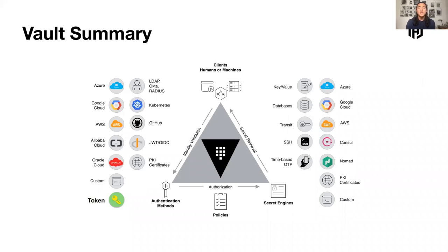On the left-hand side are authentication methods — that's your source identity, effectively the mechanism to prove your identity with Vault. And on the right-hand side are secrets engines, and you can think of those as your destination identities. When we think about secrets management, it's really just a mapping of identities: I have an identity on one side, and I need an identity on the other side.